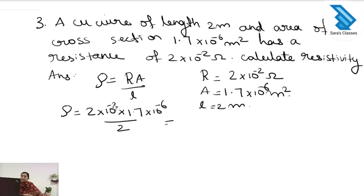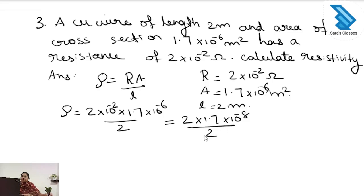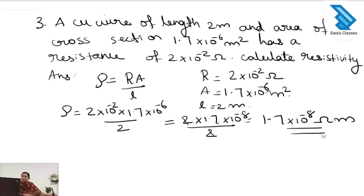When multiplying, the powers of 10 give 10⁻⁸. So it is 2 × 1.7 × 10⁻⁸ divided by 2, which gives 1.7 × 10⁻⁸ ohm meter. The resistivity is 1.7 × 10⁻⁸ ohm meter.